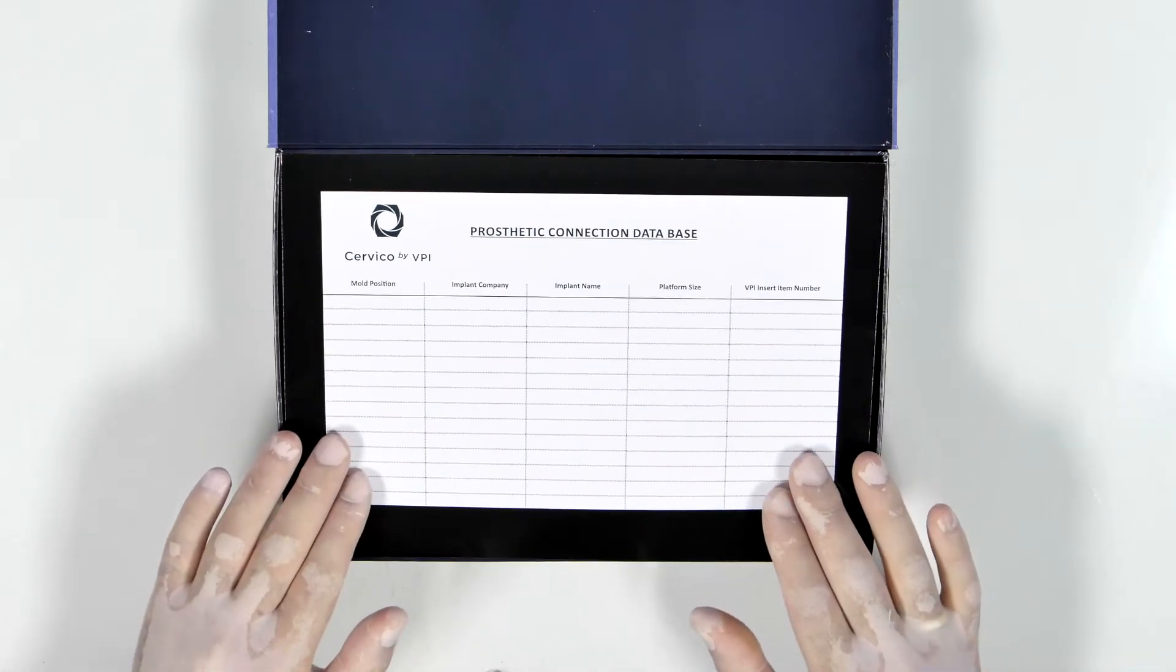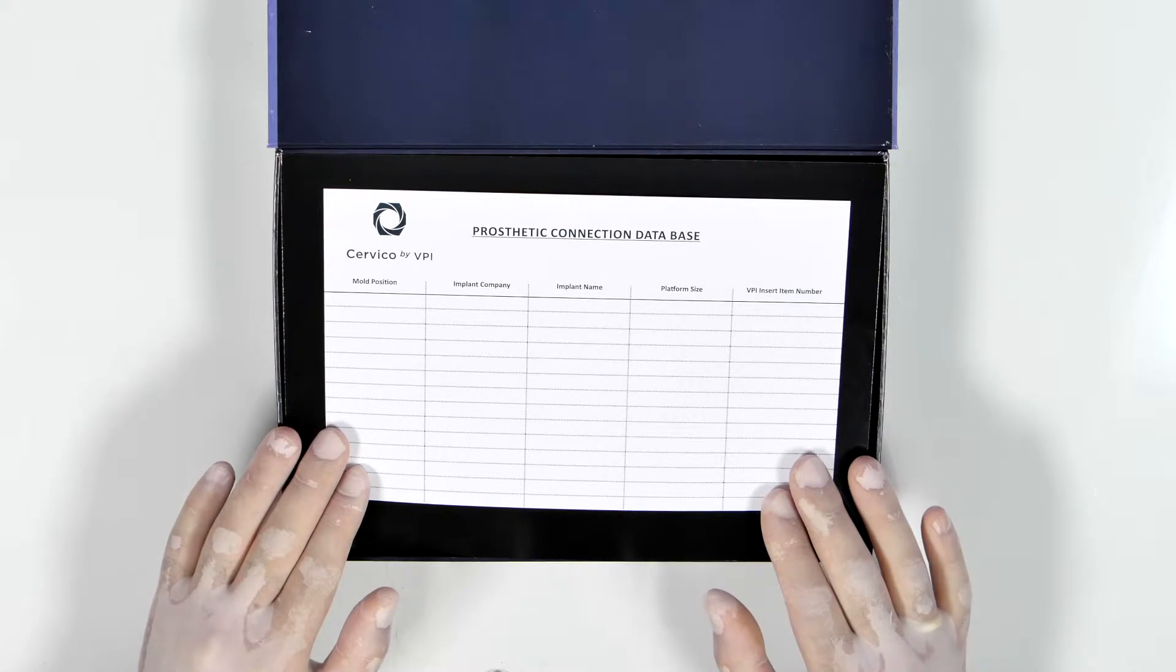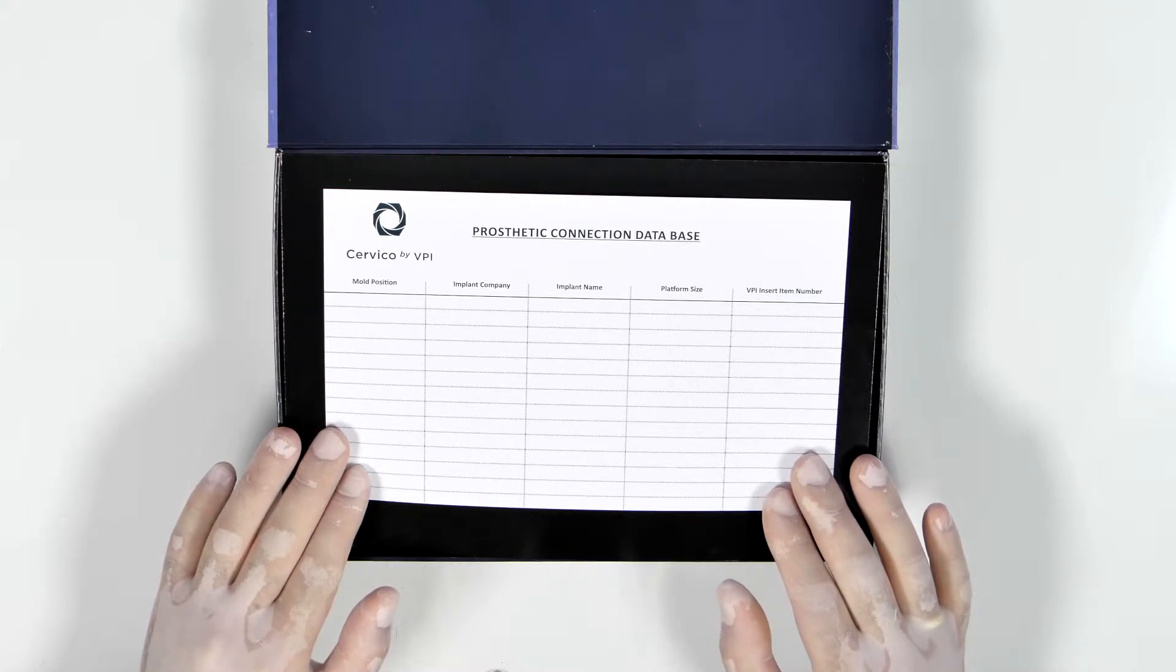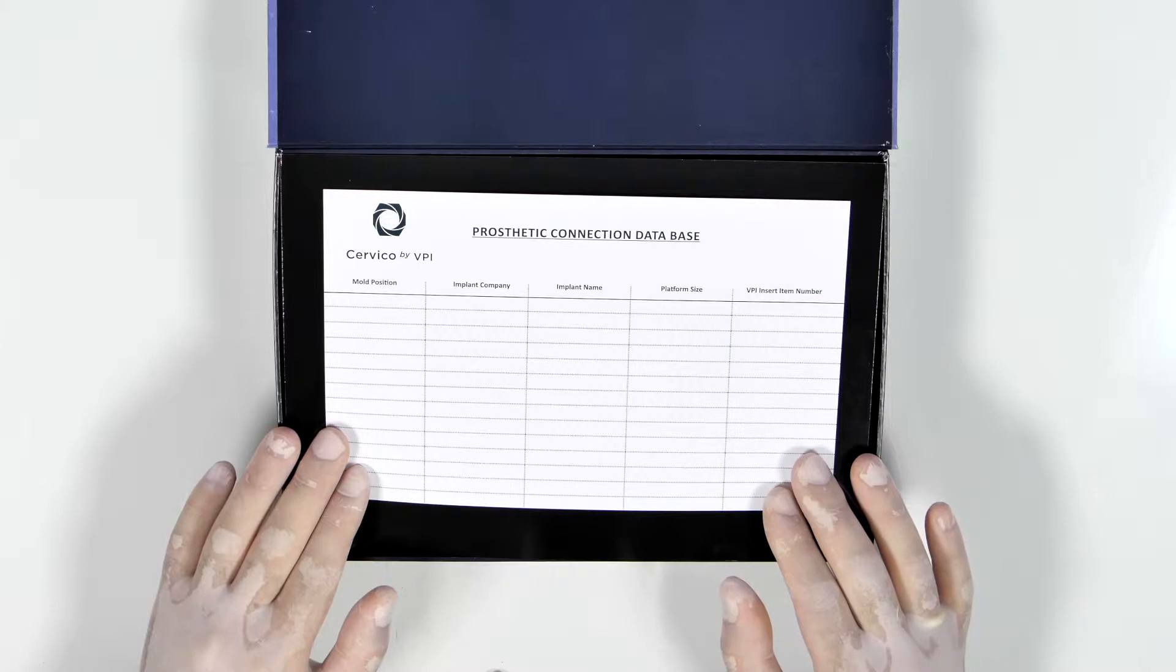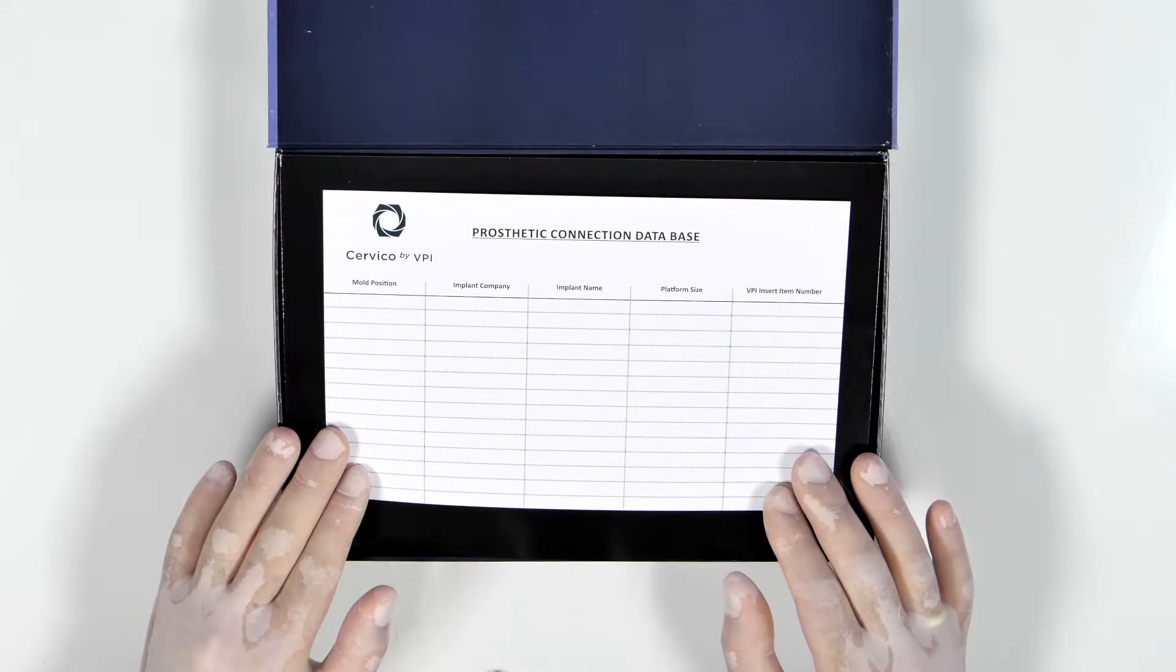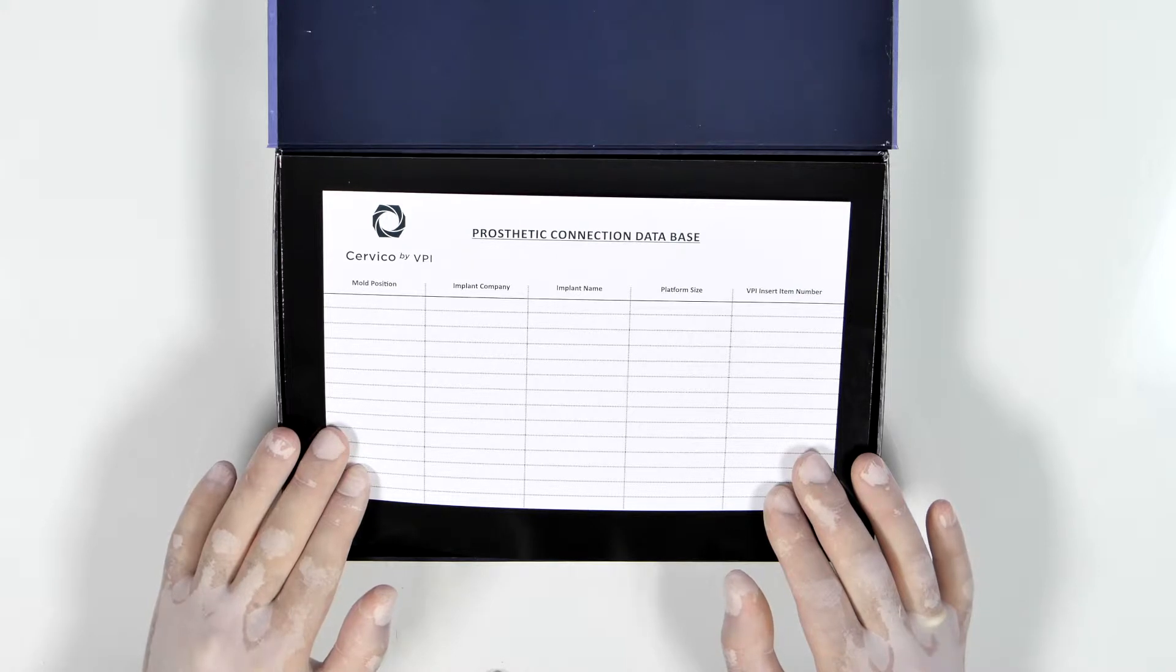You will also find the Prosthetic Connection Database card. This card is particularly important as you can write down the type of VPI Prosthetic Connection Insert utilized in every different position of the mold. This can be used as a reference for your assistant when fabricating the custom healing abutments and their duplicate impression posts.